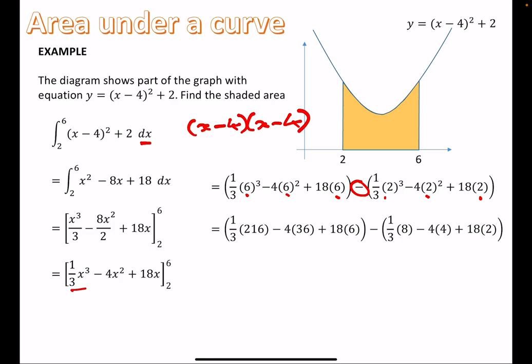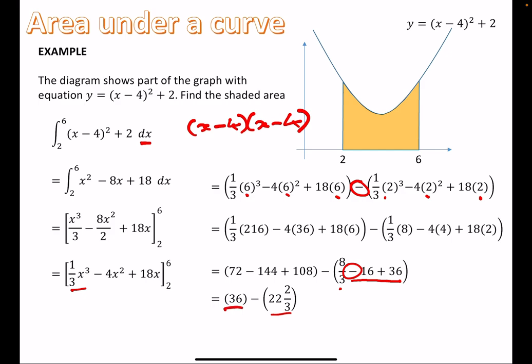Working through: 6³ = 216, 6² = 36, and 2³ = 8. Simplify in stages rather than all in one go in a calculator. For the first bracket: 216/3 = 72, minus 4×36 = 144, plus 18×6 = 108, giving 36. For the second bracket: 8/3 minus 4×4 = 16, plus 18×2 = 36 — be careful with signs: −16 + 36 = 20, then 20 minus 8/3 gives 22 and two-thirds. So 36 minus 22⅔ = 13 and a third. One thing to be careful of — this is an area.